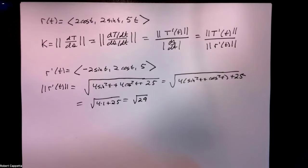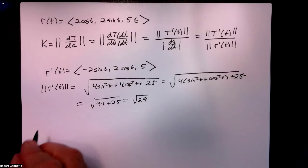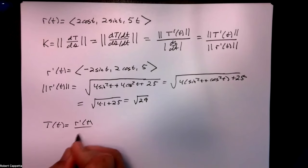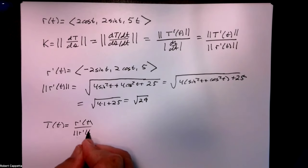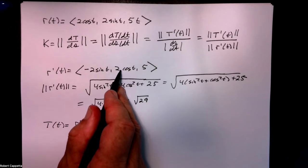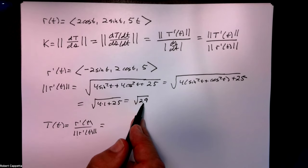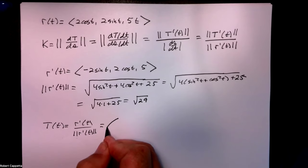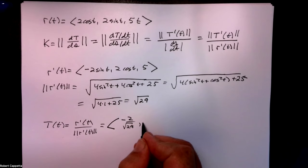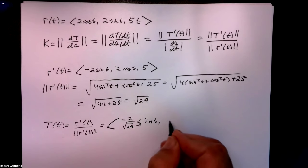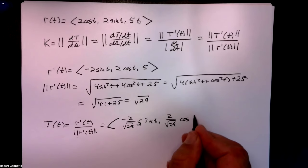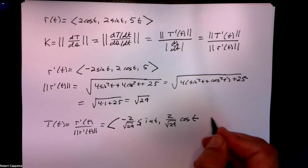Recall that T(t) is velocity divided by speed. So T(t) = (−2 sin t, 2 cos t, 5) divided by root 29, which gives T(t) = (−2/√29 · sin t, 2/√29 · cos t, 5/√29).